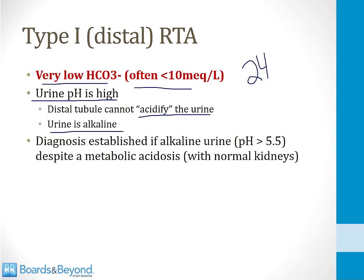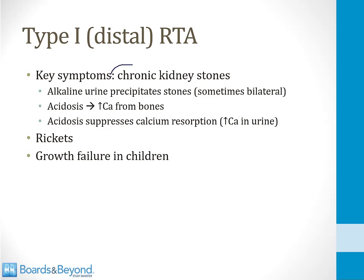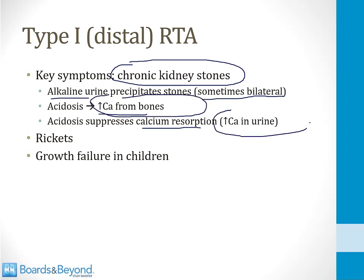The diagnosis of a distal RTA is established if you have a metabolic acidosis and an alkaline urine — an alkaline urine is considered a urine with a pH greater than 5.5. A classic symptom of a distal RTA is chronic and recurrent kidney stones, which is high yield. When the urine becomes alkaline, it can precipitate stones, sometimes bilateral. The acidosis also causes more calcium to be reabsorbed from bones and suppresses calcium resorption in the kidneys, leading to more calcium in the urine and a setup for kidney stones. The calcium loss can lead to rickets in children, and children can have growth failure if they have an undiagnosed and untreated type 1 or distal RTA.